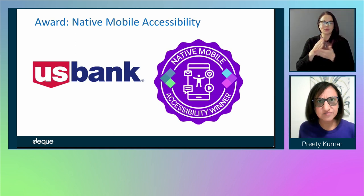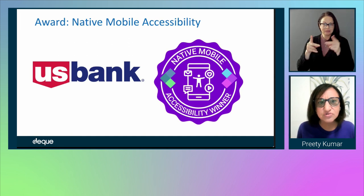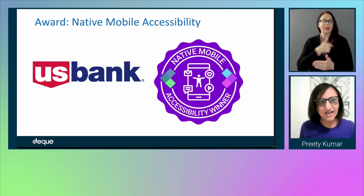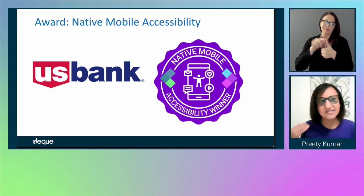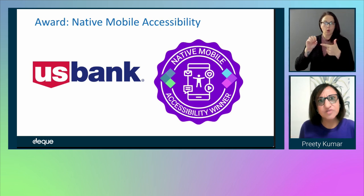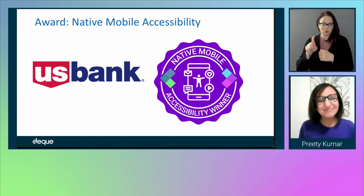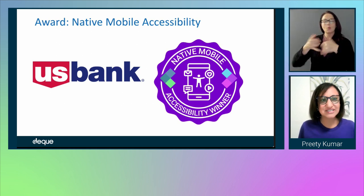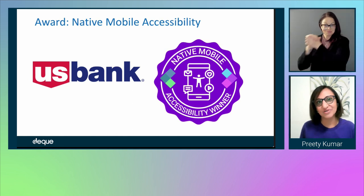Native mobile accessibility is fast-changing and relatively new. We wanted to recognize that in this complex ecosystem of Android and iOS accessibility, it takes a lot of gumption to make that happen. The award for native mobile accessibility goes to US Bank. Congratulations, US Bank, for that commitment to native mobile accessibility as more and more of us go to native mobile apps.